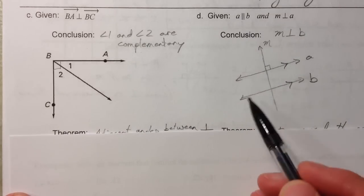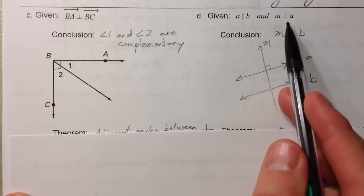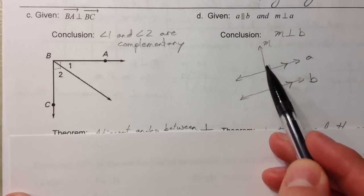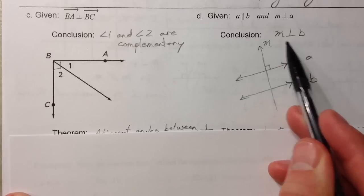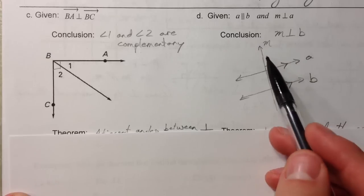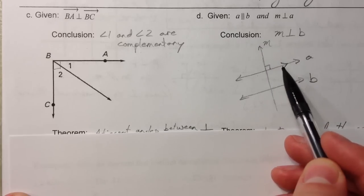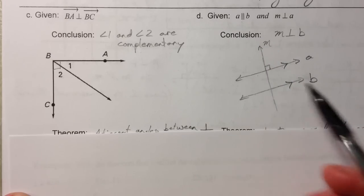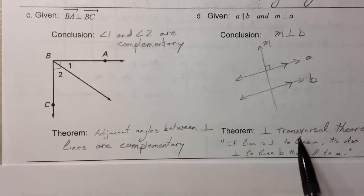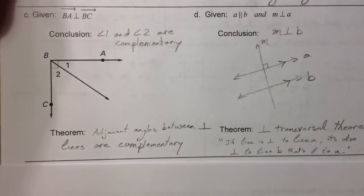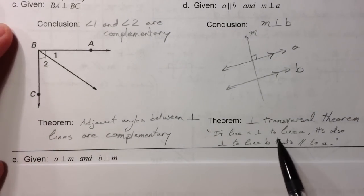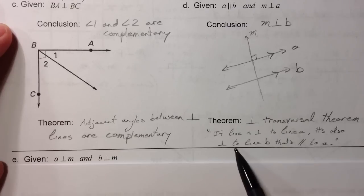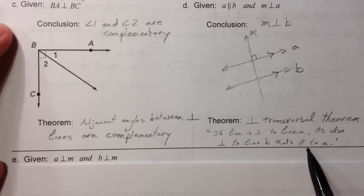If we have two parallel lines a and b, and line m is perpendicular to a, then m has to also be perpendicular to b. So if m is perpendicular to one of the parallel lines, it also has to be perpendicular to the other. This is called the perpendicular transversal theorem — if a line is perpendicular to line a, it's also perpendicular to line b, which is parallel to a.